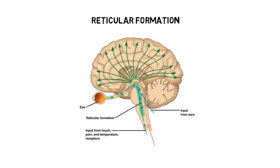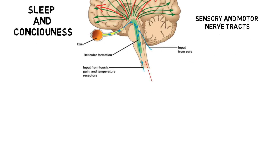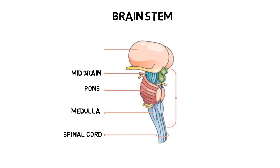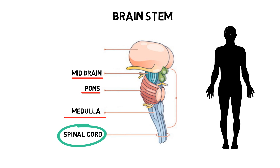The reticular formation is a network of neurons running throughout the brain stem, receiving both sensory and motor nerve tracts. The function of the reticular formation is in sleep and consciousness. The brain stem is the stem-like part of the brain, connecting to the spinal cord and consisting of the medulla oblongata, pons and midbrain.